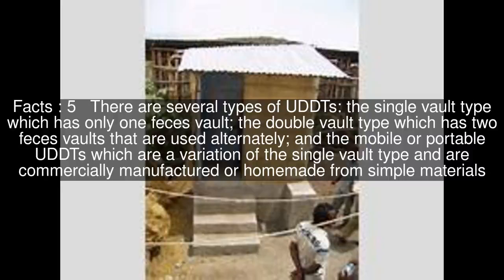There are several types of UDDTs: the single vault type which has only one feces vault, the double vault type which has two feces vaults that are used alternately, and the mobile or portable UDDTs which are a variation of the single vault type and are commercially manufactured or homemade from simple materials.